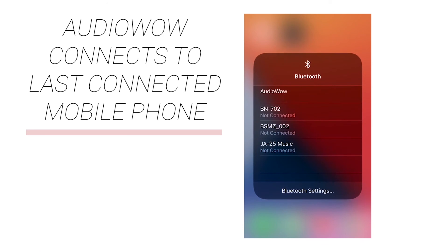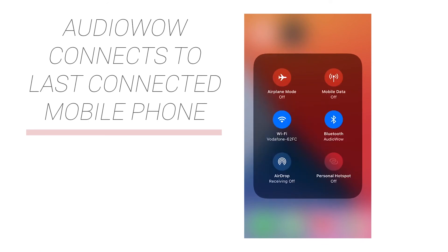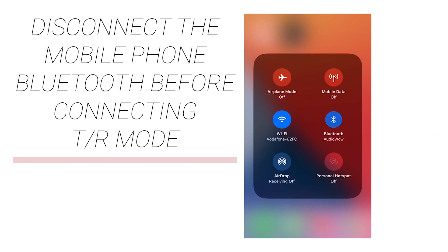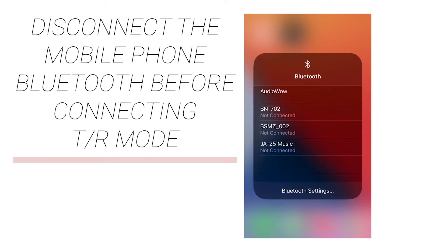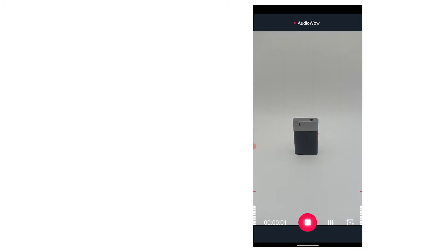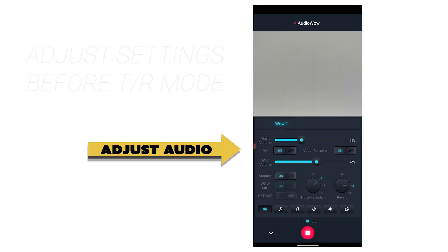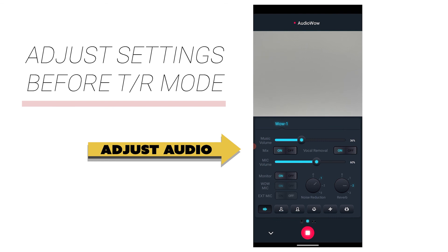Use a 3.5mm adapter cable to connect your Smart Mic Plus and your DSLR or mobile phone, then it can be used normally. When Audio Wow is turned on, it will give priority to connect to the last connected mobile phone, so please turn off the Bluetooth of the connected mobile phone before connecting in TR mode. Tuning is not possible in TR mode — you need to connect to the phone with Bluetooth first, adjust settings in the app, then disconnect the phone and resume TR connection.